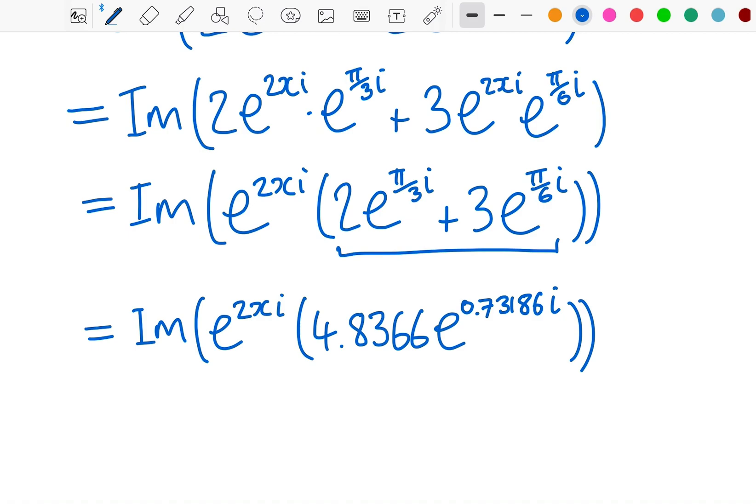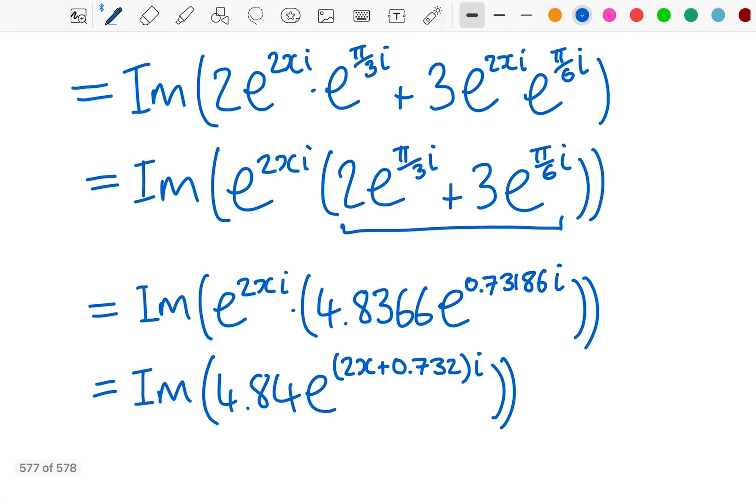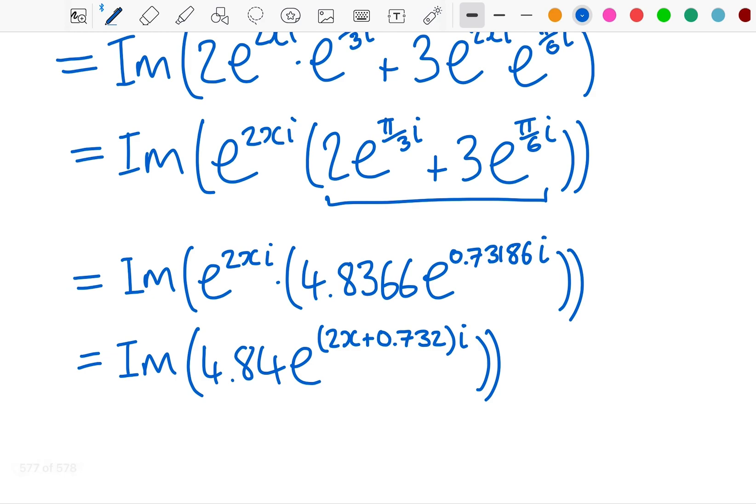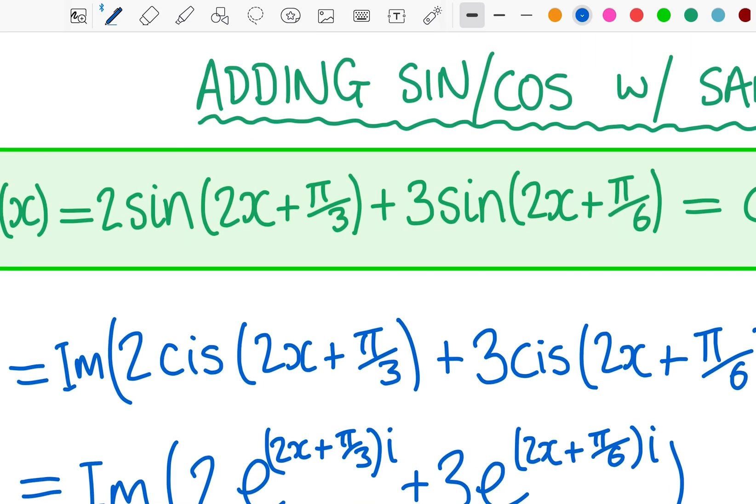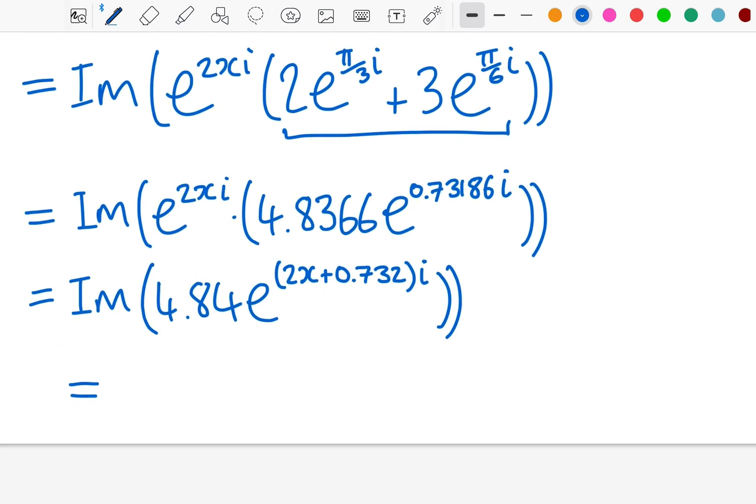We can use that exponent rule now in reverse. I've got two things that are e to the power of something. I can combine them into one by adding their exponents. That 4.84 will go out to the front, this will be added. I'll just do that to three significant figures. And now I have a single complex function. I want to go back to just looking at these sines, so I'm going to take the imaginary part of this.